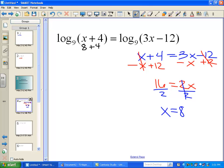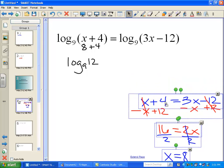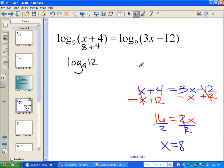8 plus 4 is 12. So, on the left side, I get log base 9 of 12. And on the right side, I've got 3 times 8 minus 12. Well, 3 times 8 is 24. 24 minus 12 is 12. So, the right side is log base 9 of 12.